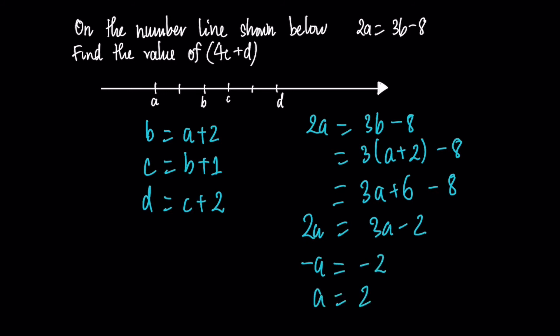So we have a equal to 2, therefore b equal to 4. Then c equal to 5. Finally we have d equal to 7.